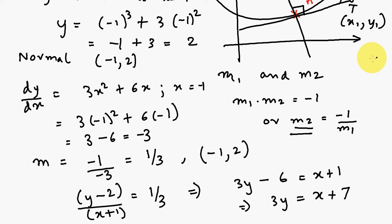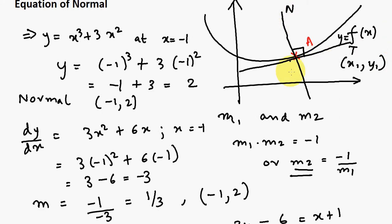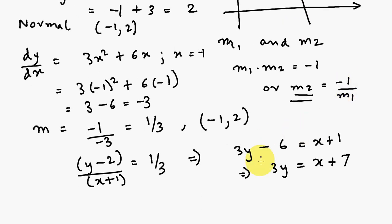Just to recap, we learned that the normal is a line which is perpendicular to the tangent at the same point. Since it's perpendicular, we can easily find out its slope when we know the slope of the tangent, and we know it passes through the same point. We can just go through it and work out the equation of the normal.